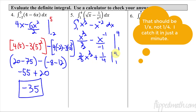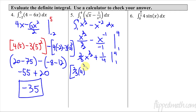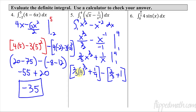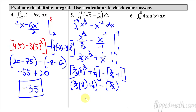Now let's plug in the numbers — the upper bound goes in first: 2/3 times 4^(3/2). For 4^(3/2), start with the square root of 4 which is 2, then 2³ is 8 — makes it a lot easier to do the bottom of the fraction first. So we get 2/3 times 8, plus 1/4. Then subtract with x = 1 plugged in: 2/3 plus 1. That gives 16/3 plus 1/4, minus (2/3 + 1) which is 5/3.